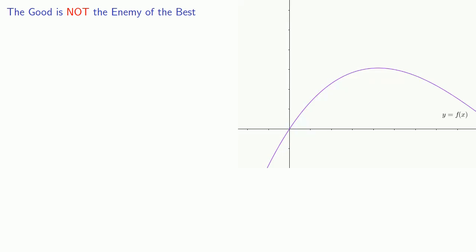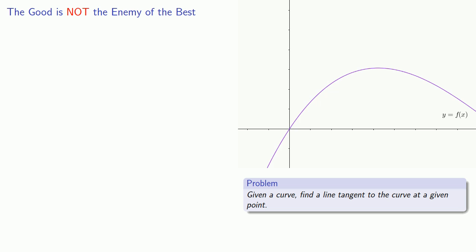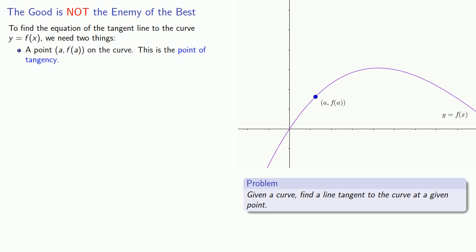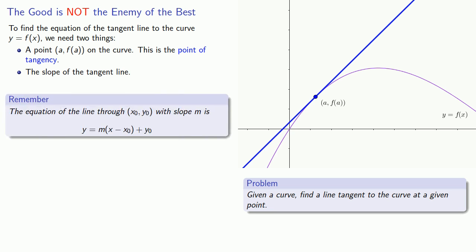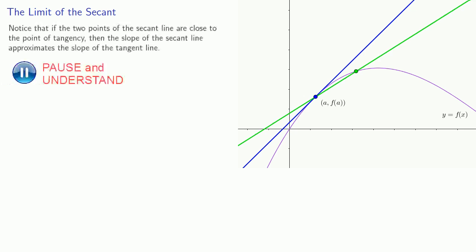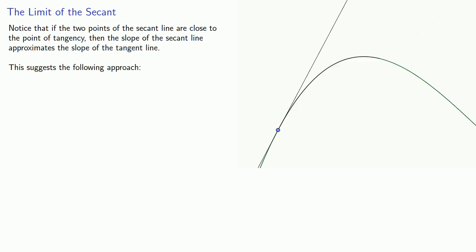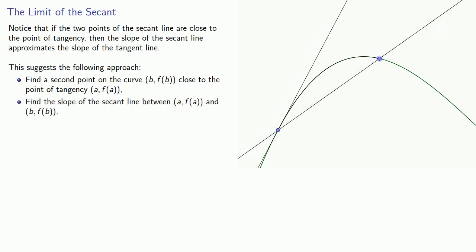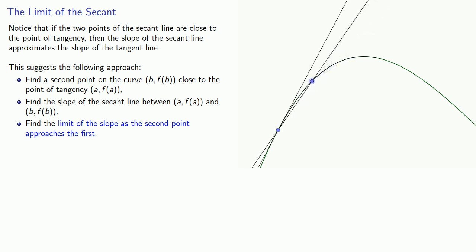So how do we find a line tangent to a curve at a given point? To find the equation of the tangent line to y = f(x), we need a point (a, f(a)) — the point of tangency — and the slope of the tangent line. The approach: find a second point on the curve close to the point of tangency, compute the slope of the secant line between them, then find the limit of that slope as the second point approaches the first. This is where the calculus comes in.